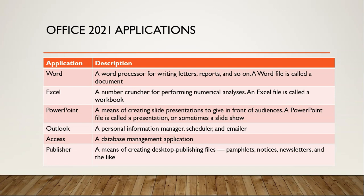Word is a word processor for writing letters, reports, and so on. Anything called document writing is what Word does, and the file in Word is called a document. Excel is a number cruncher for performing numerical analysis — anything concerning mathematical calculations, logical calculations, and all sorts. Excel is what handles those parts.